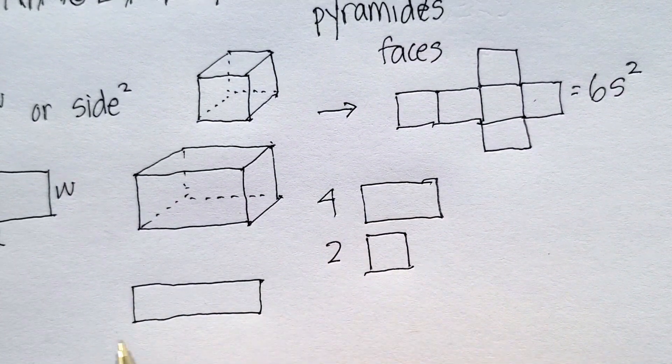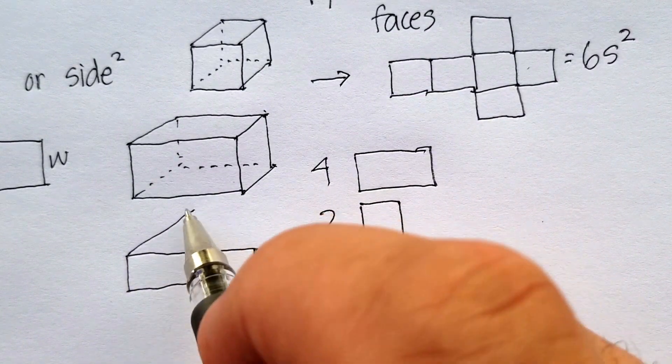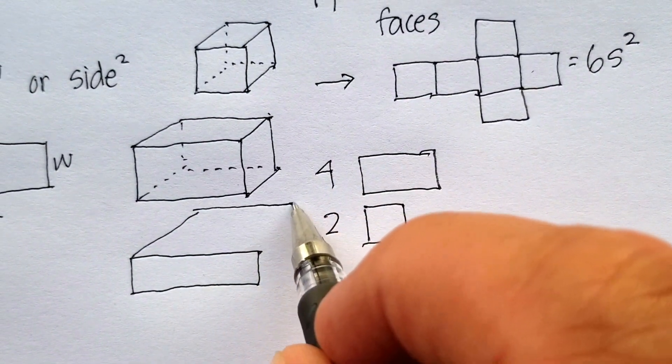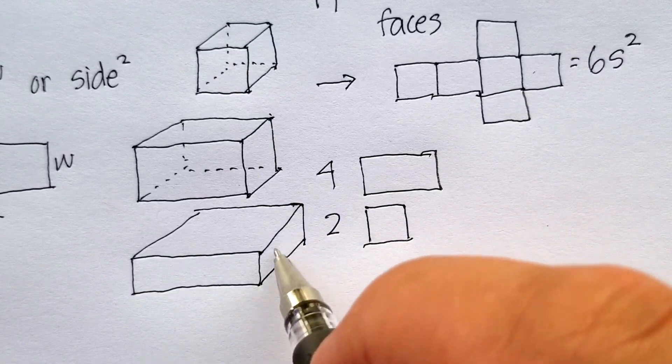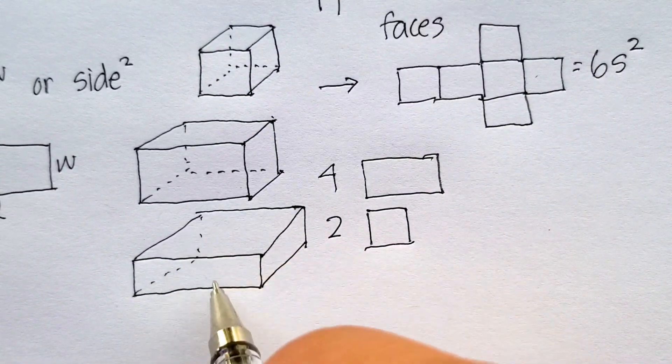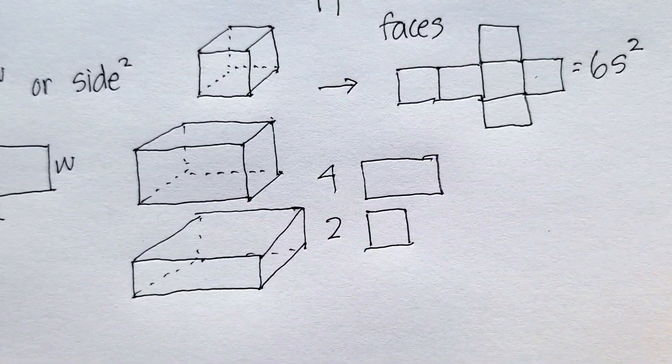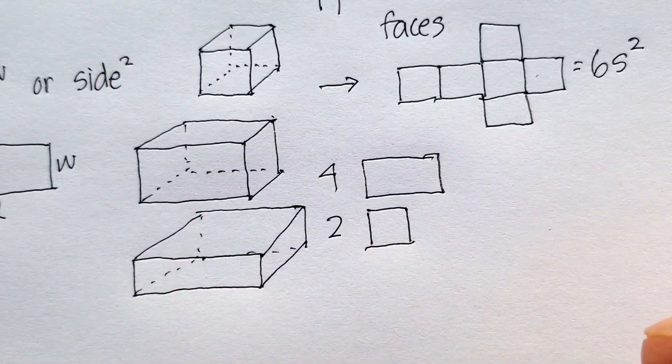Or you could also have something where it might look something like this—long and skinny on one face, much longer on the other faces, and then this is also another different shape. In which case, again,